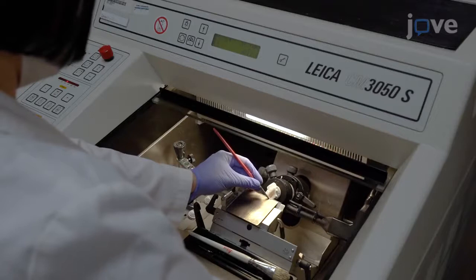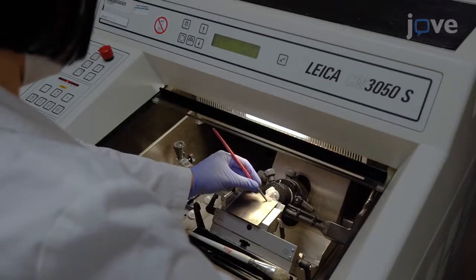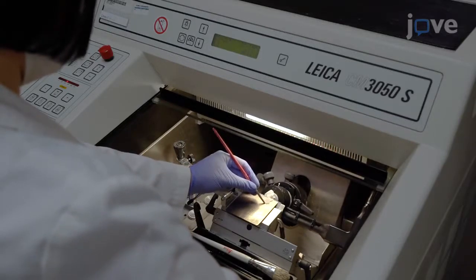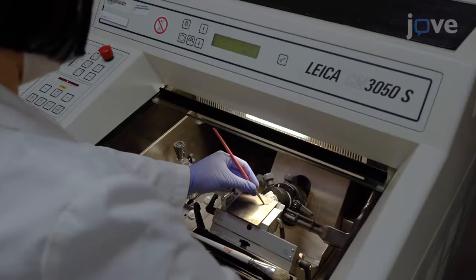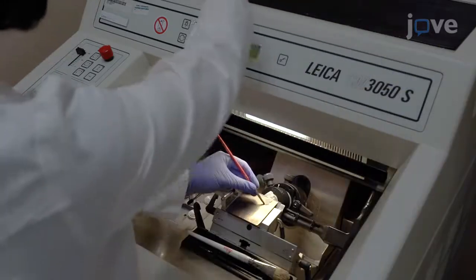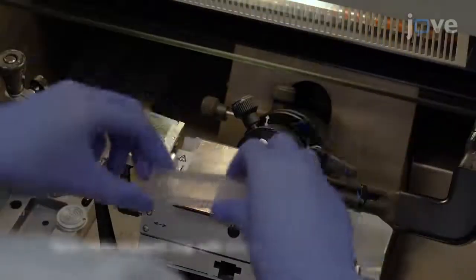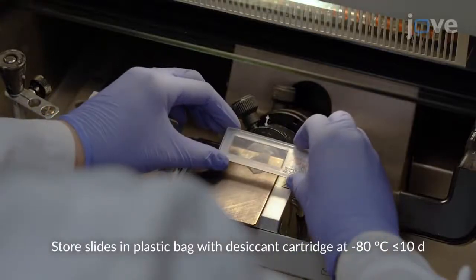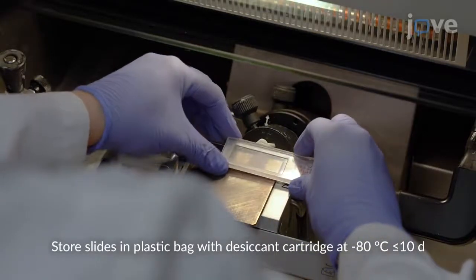After acquiring the tissue sample, use a cryostat set to minus 20 degrees Celsius to cut the specimen to a thickness of 12 micrometers and use the slide adapter to fix the specimen to a specialized laser microdissection slide.